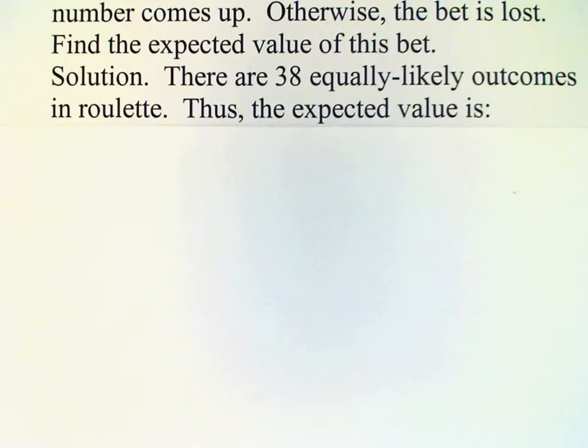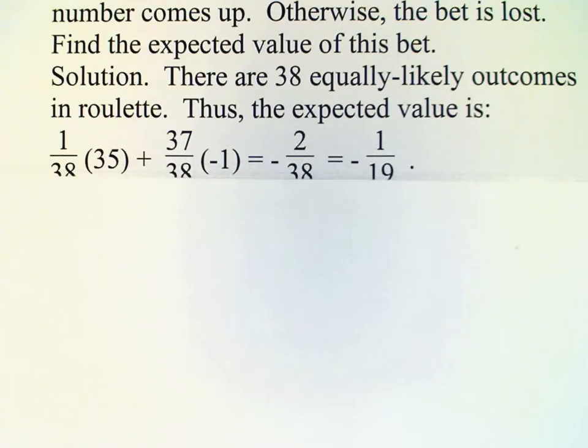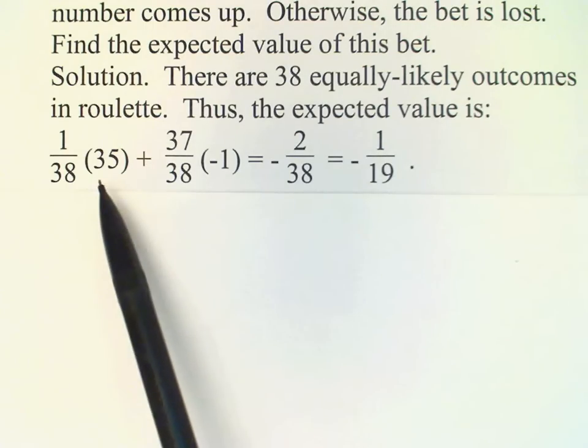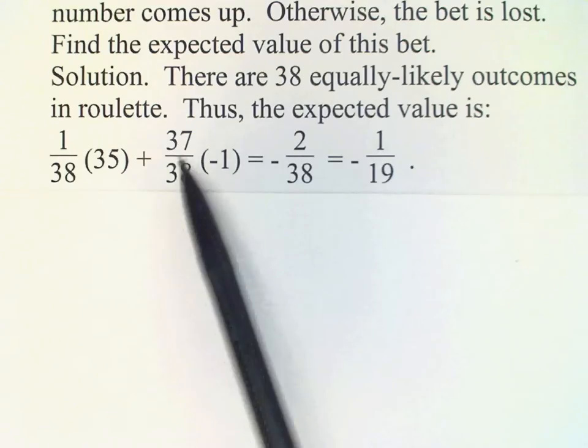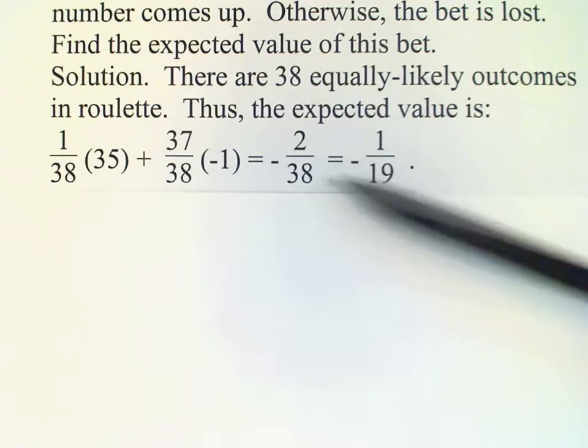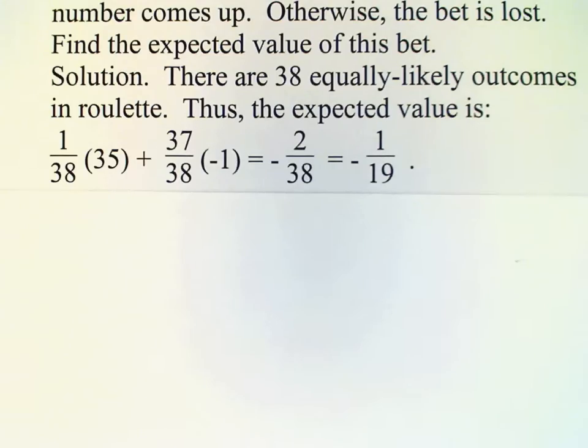And so therefore the chance of any one of them coming up is 1 out of 38. And so therefore we can distill down our expected value calculation into basically just two outcomes, namely a win and a loss. The win has a chance 1 out of 38 and the value to us is $35. The loss carries a probability of 37 out of 38 and carries a value of negative $1 because we're going to lose our bet in that case. And the answer is a negative 2 out of 38 or a negative 1 out of 19.